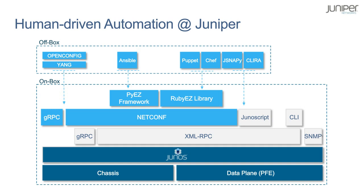This slide can best be thought of as an ascending — or rather descending — order of complexity, depending on how you look at it. At the very bottom we have the chassis and data plane layer. This is going to be the most complex but also the most flexible — you can do essentially anything when programming at the PFE layer. However, we don't necessarily want to do that from an automation standpoint. Immediately above that we have the XMLRPC layer, which is sort of the core of Junos, and on top of that the rest of the tools are built. The CLI is just one application among many others, including Junoscript and NetConf.